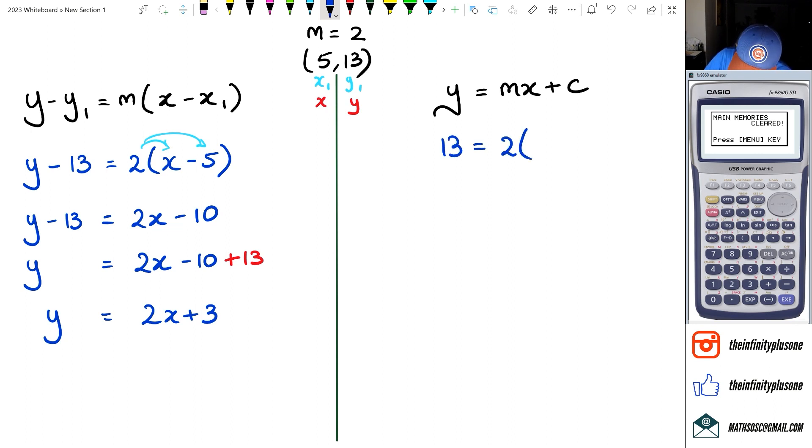So in this case we're going to get 13 equals 10 plus c. Of course, getting rid of the 10 to the other side, we're going to get 13 minus 10 is equal to c, and c is equal to positive 3.